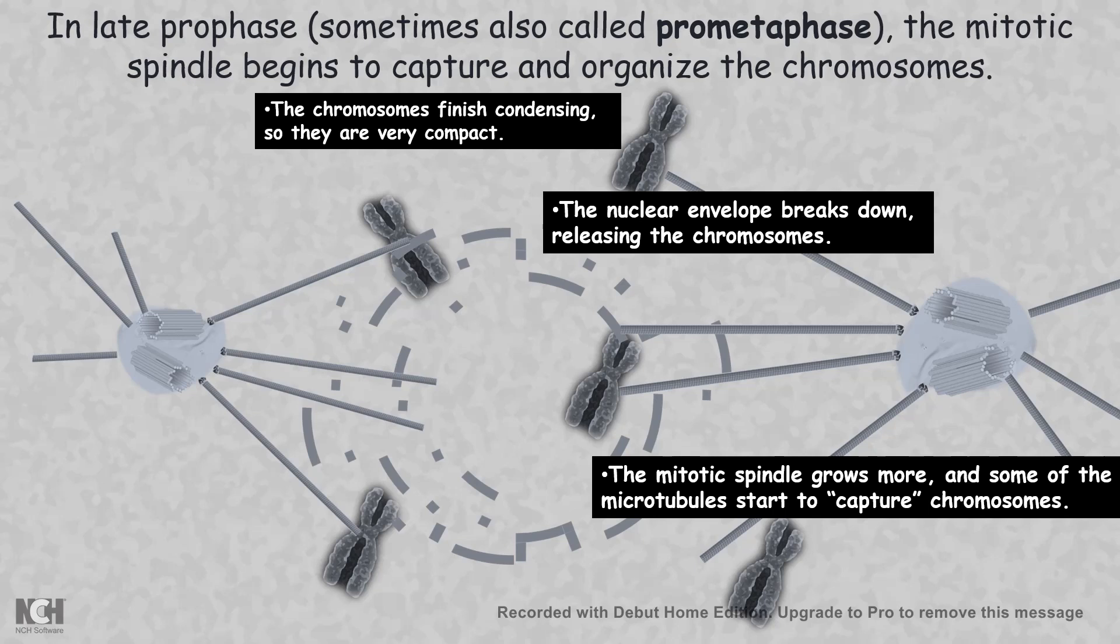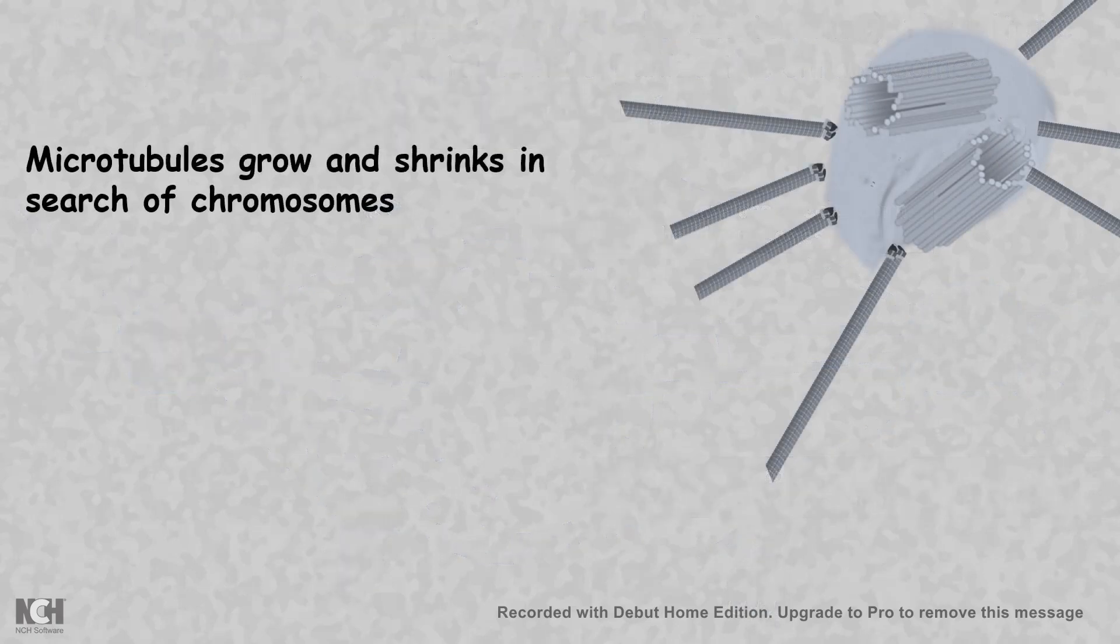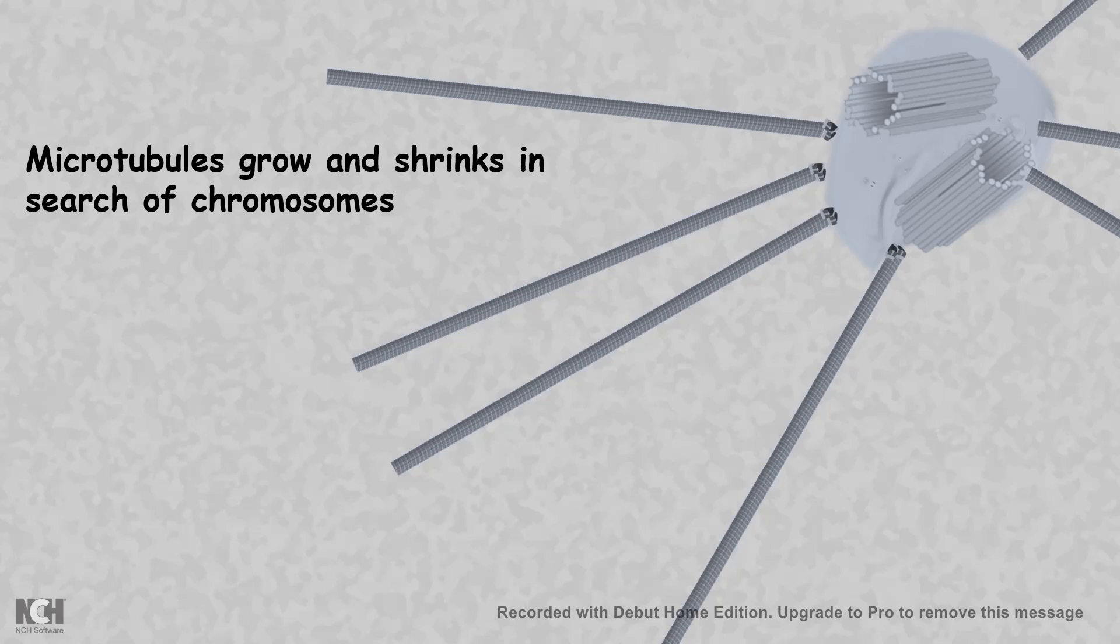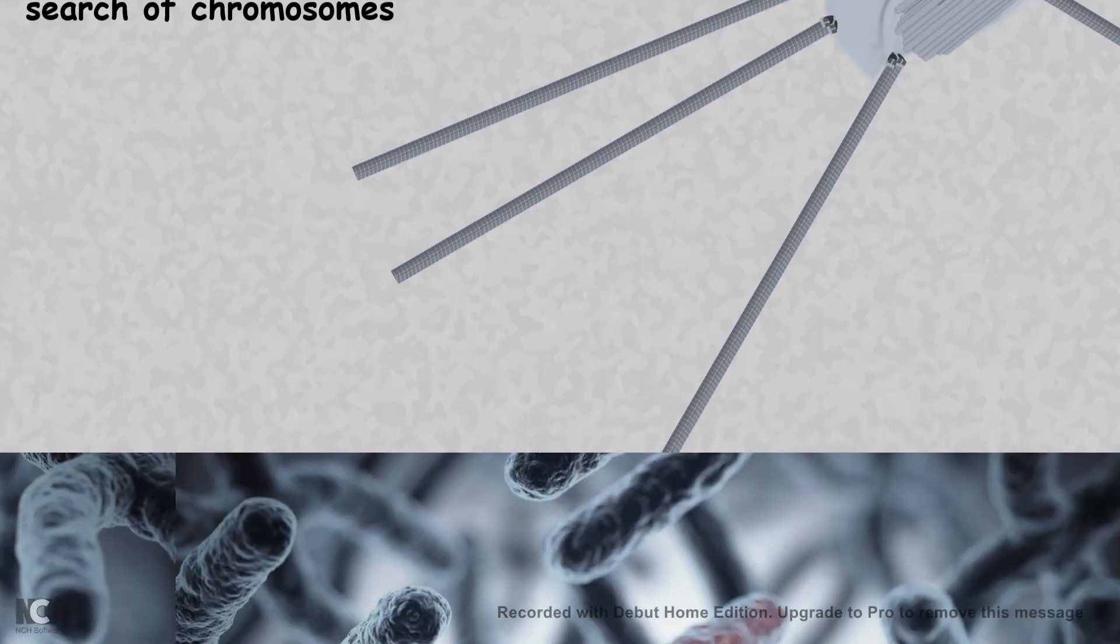These growing and shrinking microtubules would eventually capture a chromosome at its kinetochore.